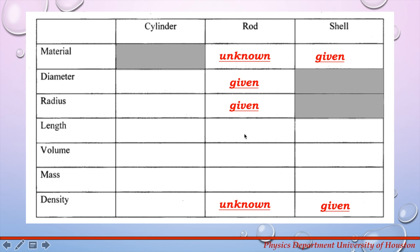You also have the given radius and length for the rod, so you can calculate the volume of the rod. Knowing that the volume of the whole cylinder equals the volume of the rod plus the volume of the shell, you can calculate the volume of the shell. With the volume of the shell and the given density of the shell material, you can calculate the mass of the shell. Since you know the total mass of the cylinder and the mass of the shell, you can calculate the mass of the rod.